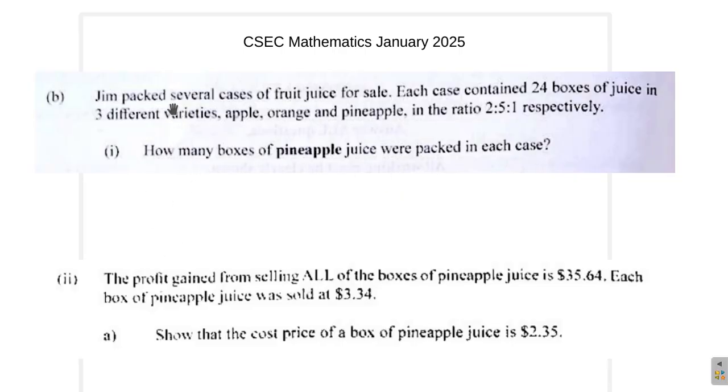It says, Jim packed several cases of fruit juice for sale. Each case contained 24 boxes of juice in three different varieties. You have apple, orange, and pineapple in the ratio 2 to 5 to 1, respectively. So, respectively means in the order in which they were mentioned. It says here, how many boxes of pineapple juice were packed in each case?